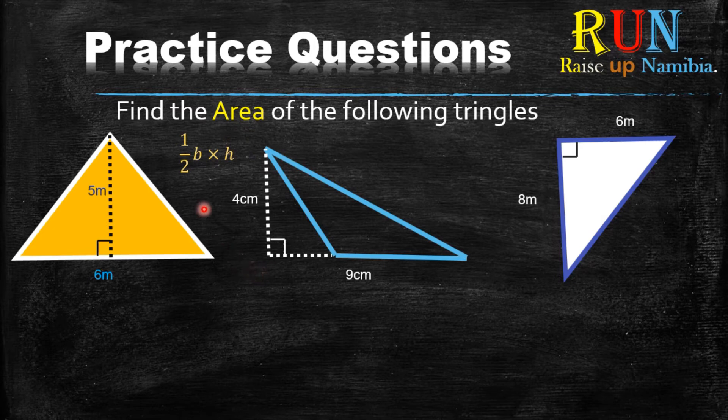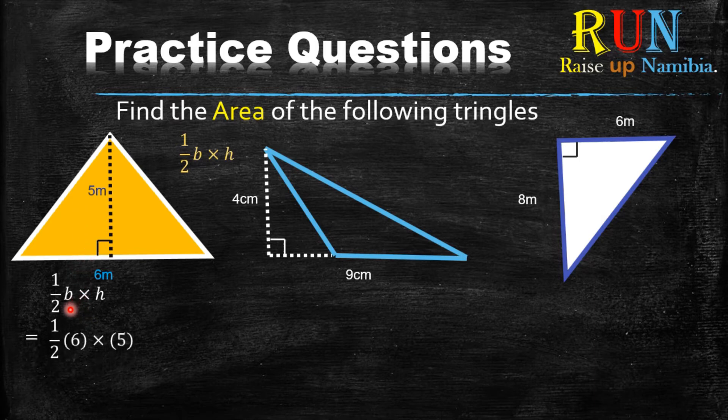So let's attempt the first example. So we bring out our formula which is half base times height. So and then you just substitute. What is the base? The base is 6. So you say half 6 multiplied by what is the height? The height is 5. So you substitute your 5 inside there and then you type it into your calculator. What answer do you get?